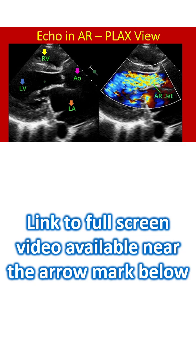Mitral valve leaflets seen in open position between the left ventricle and the left atrium are thickened. The large aortic regurgitation jet can be seen as a mosaic jet in the left ventricular outflow tract, anterior to the anterior mitral leaflet. A portion of the thickened aortic valve can be seen between the aorta and left ventricle.